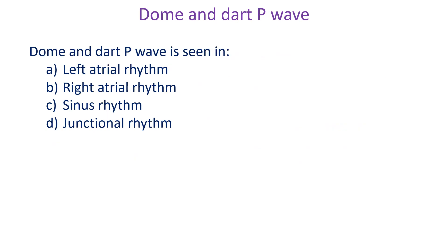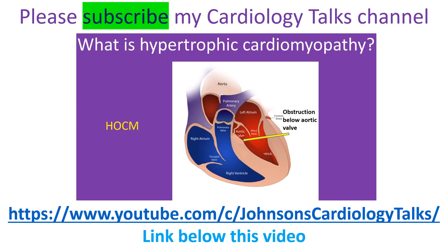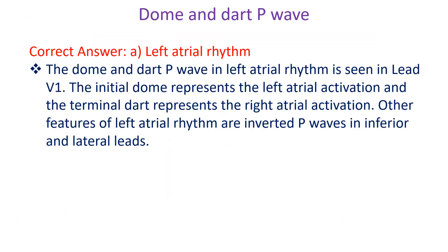Dome and dot P wave is seen in: A. Left atrial rhythm. B. Right atrial rhythm. C. Sinus rhythm. D. Junctional rhythm. Correct answer: A. Left atrial rhythm. The dome and dot P wave in left atrial rhythm is seen in lead V1. The initial dome represents left atrial activation and the terminal dot represents right atrial activation. Other features of left atrial rhythm are inverted P waves in inferior and lateral leads.